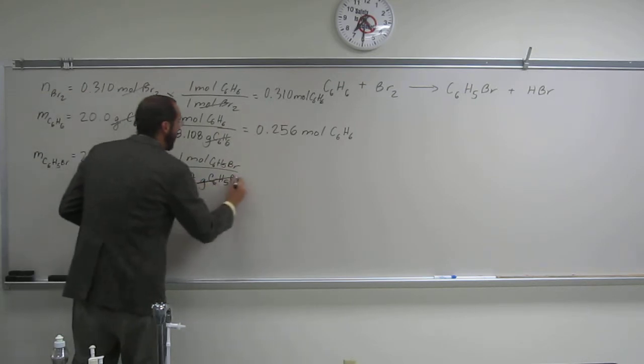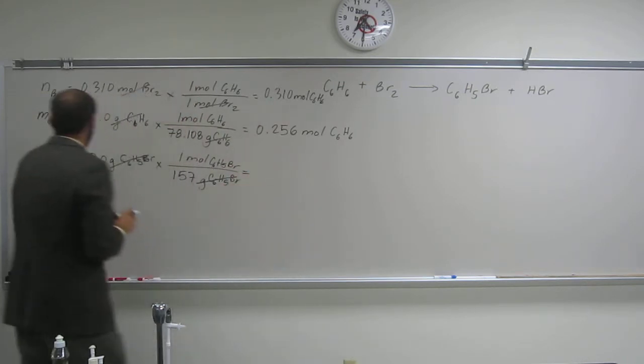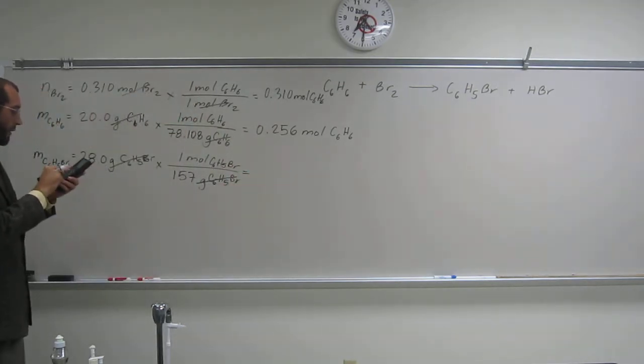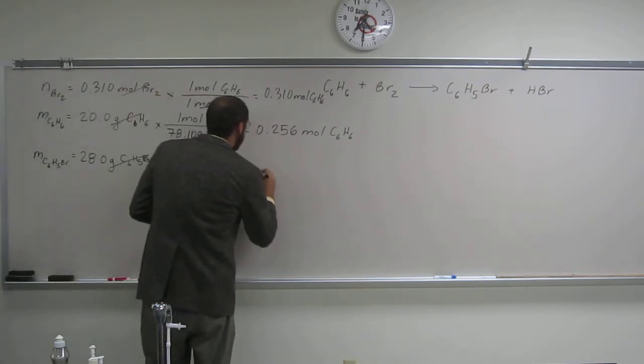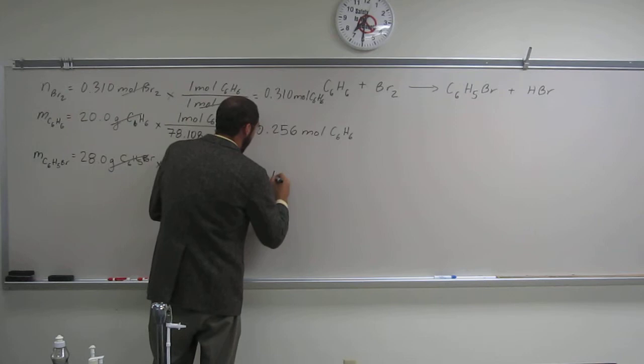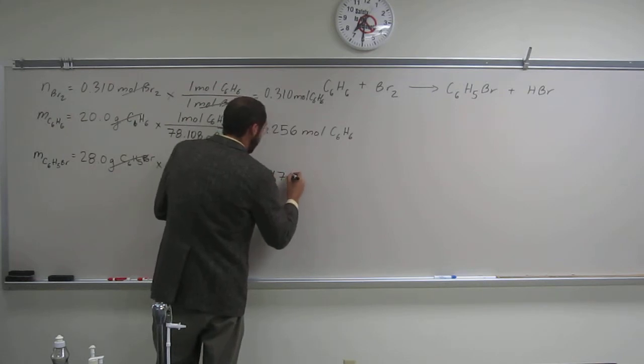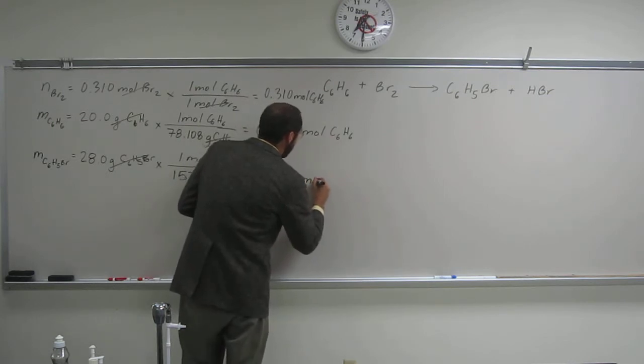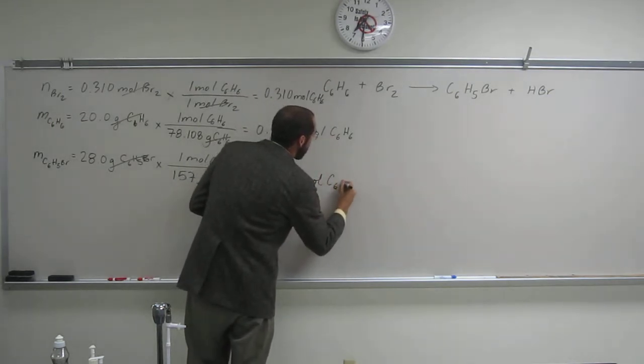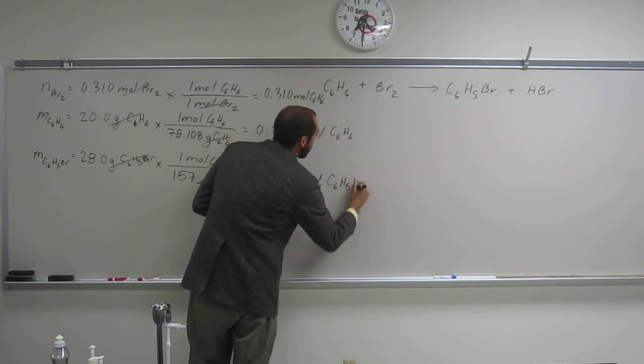So that'll cancel with that. And now we just say 28 divided by 157. And that gives us the number of moles of products. We got 0.178 moles of C6H5Br.